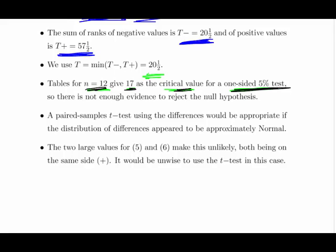Tables for n equals 12 gives 17 as the critical value for a one-sided 5% test. So in this case the test statistic has to be less than 17. So in this case there is not enough evidence to reject the null hypothesis. Now, the other question was actually related to the paired sample t-test. Using the differences would be appropriate if the distribution appeared to be approximately normally distributed, but that actually was unlikely. We looked like we have two very high values on the same side, and it essentially looked a bit skewed. So, didn't look like a good choice to use the, we had two values that really skewed the distribution. So that would really undermine the assumption of normality. Although the fact is the t-test is actually quite robust to this, but essentially what we're here to do is learn about non-parametric tests.